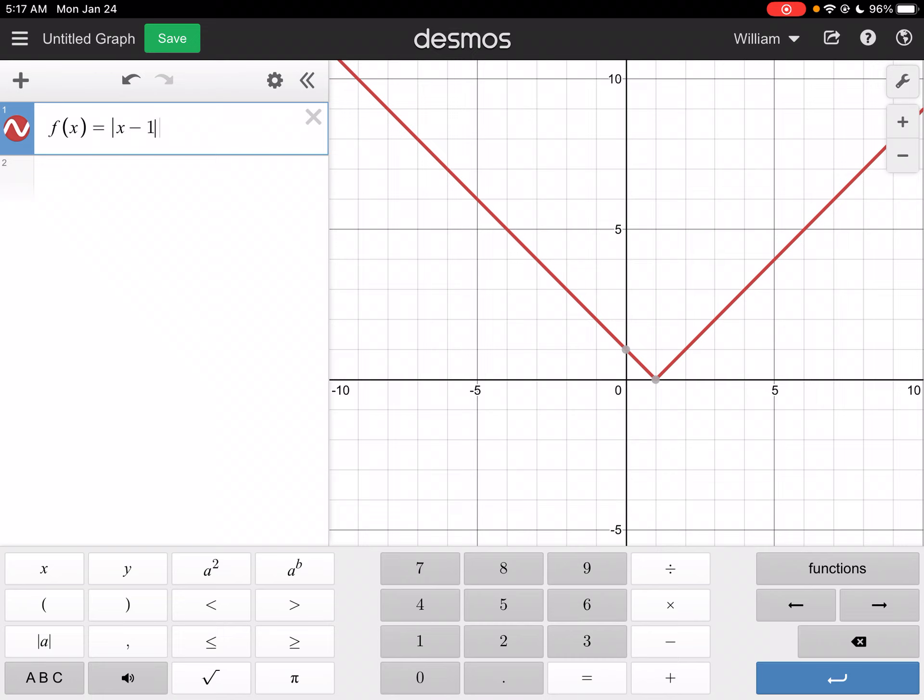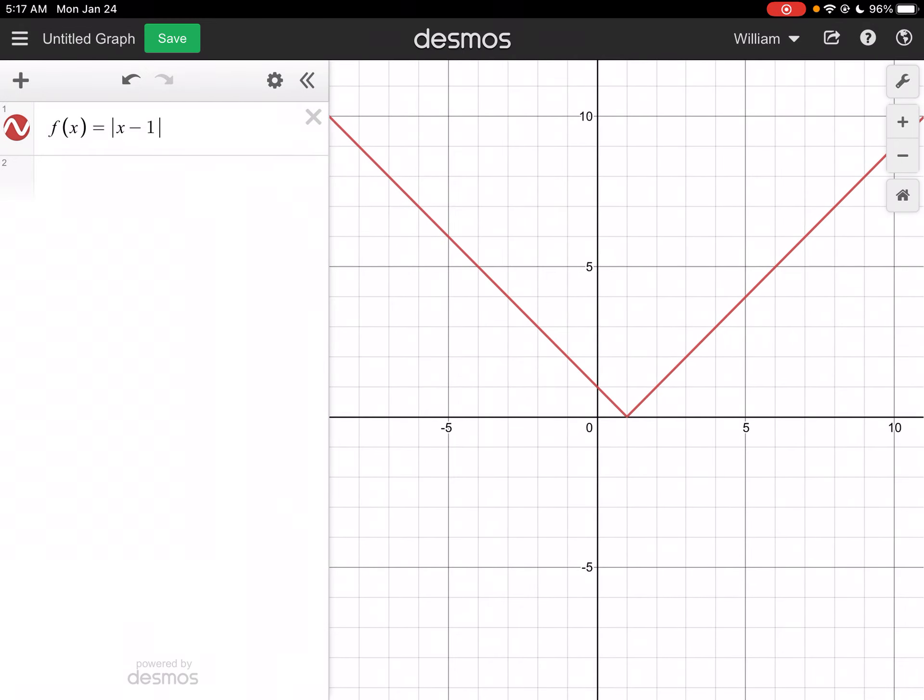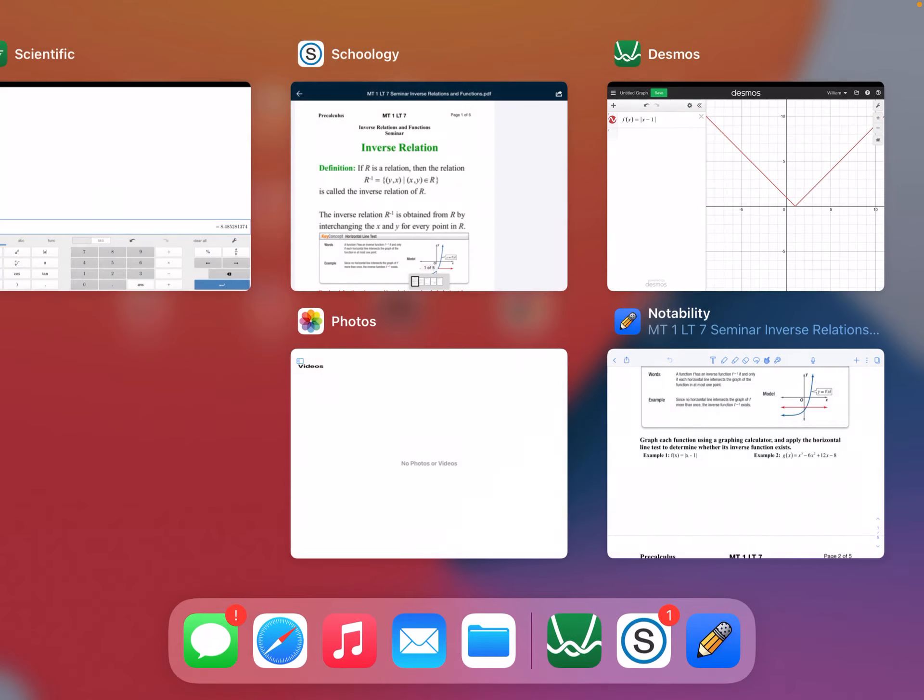And notice, since you have a horizontal line, I could draw a horizontal line going across, and it's going to touch it more than once. So this one does not have an inverse.